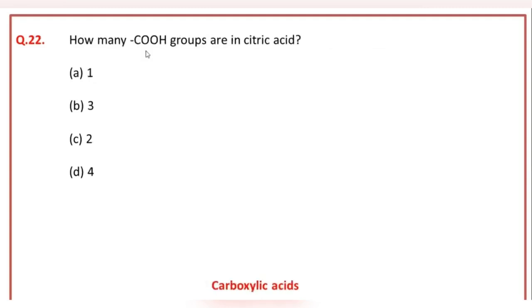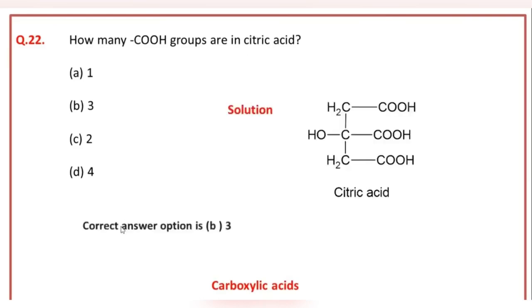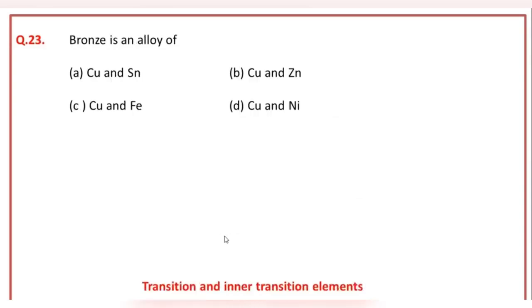Carboxylic acid: how many COOH groups are present in citric acid? The correct answer option of this question is A, that is 3.